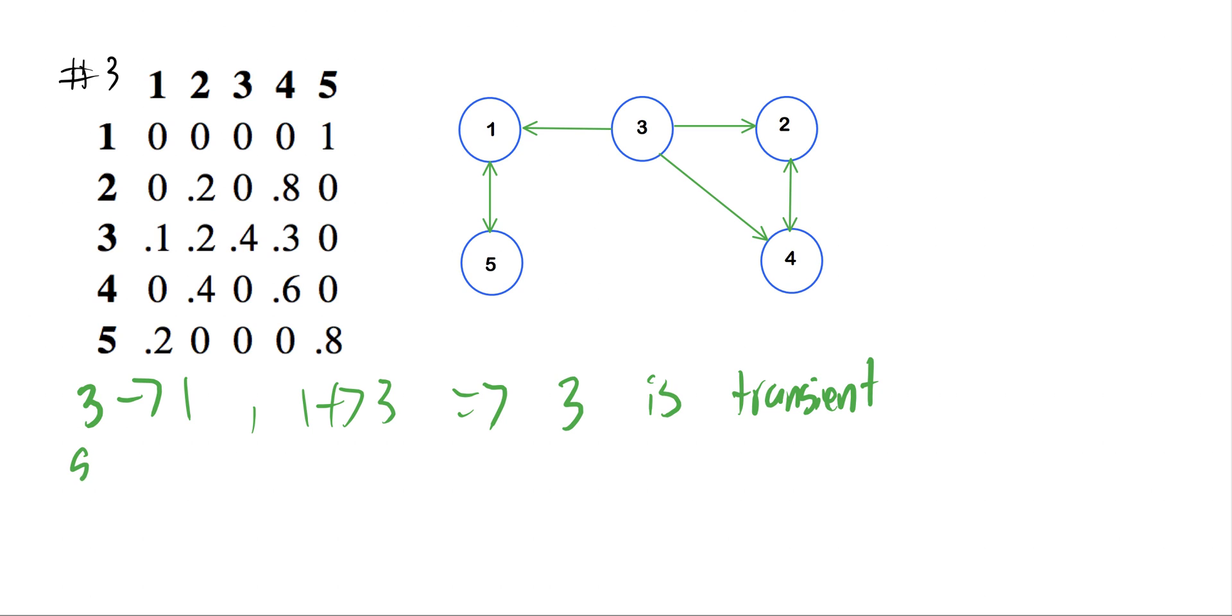So the set 1 and 5 is impossible to get out of, right? So therefore it is closed. And 1 communicates with 5, and 5 communicates with 1. So our definition of irreducibility is also confirmed. So it's irreducible. This implies by definition again, if a set C is closed and irreducible, then all of the states are recurrent. So 1 and 5 are recurrent.